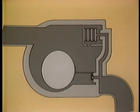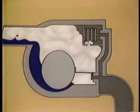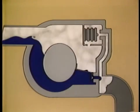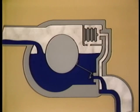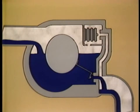Condensate enters through the inlet near the top of the trap and raises the float, opening the valve. The condensate drains from the trap through the outlet near the bottom, leaving a condensate seal between the inlet and the valve.